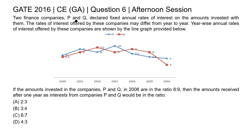This is question 6 of the Civil Engineering General Aptitude section of GATE 2016 afternoon session. Two finance companies P and Q declared fixed annual rates of interest on the amount invested with them. The rates of interest offered by these companies may differ from year to year, as shown by the line graph provided below. If the amounts invested in companies P and Q in 2006 are in the ratio 8 to 9, then the amount received after one year as interest from company P and Q would be in the ratio?